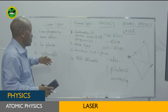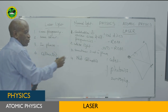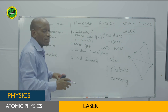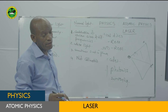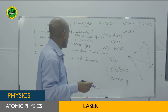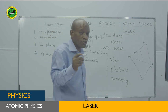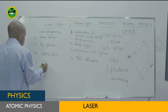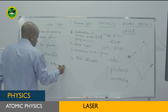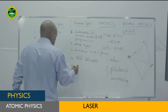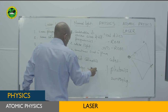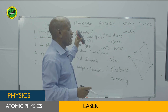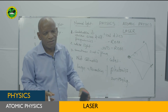Another difference relates to attenuation. Normal light has large attenuation — it can only travel a short distance before fading. Laser light, however, can travel a very long distance with very little attenuation, which is why it can be used for satellite communication. These are the main differences between normal light and laser light.